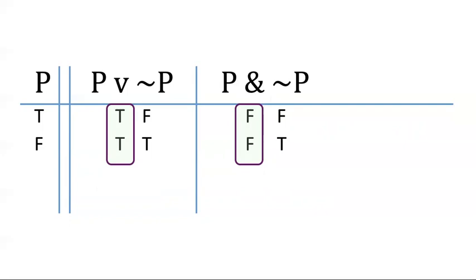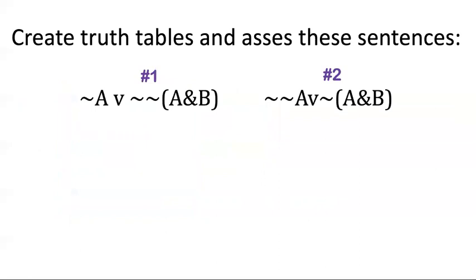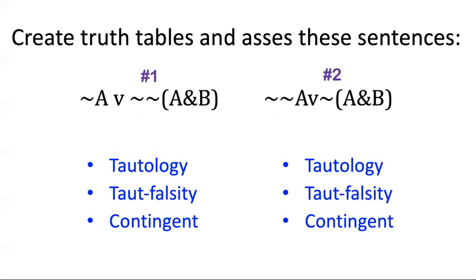Let's see if you can do some examples of your own now. Here are two complex sentences to practice. Tell me if each sentence is a tautology, a tautological falsity, or contingent. Do a truth table for each — pause your video now and compute some truth functions so that you actually learn something from watching these videos.